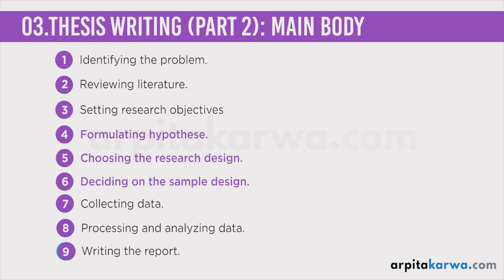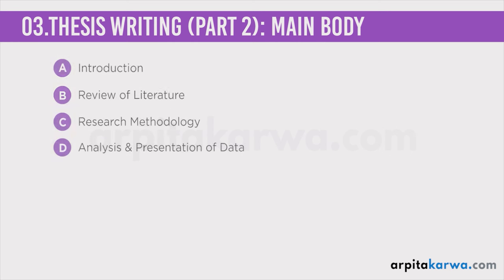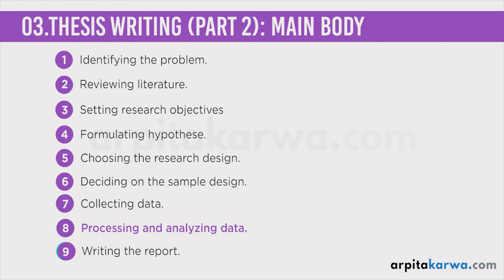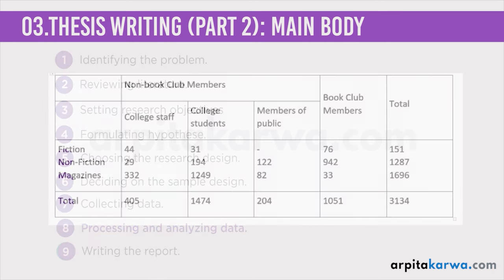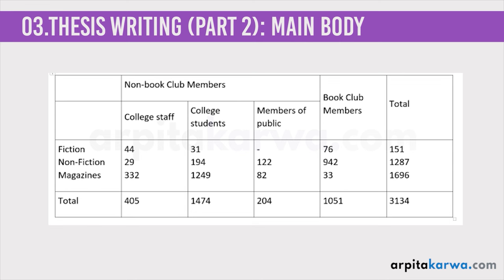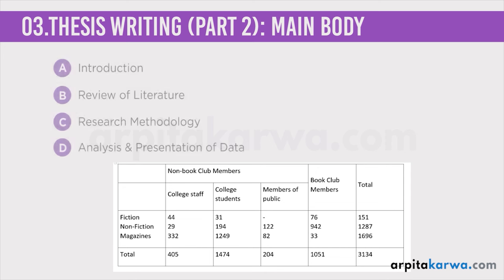The fourth chapter is analysis and presentation of data. After collecting data, the next step is to analyze and present it in a graphical format. In the thesis, this chapter presents the results accompanied by tables and graphs. Observations and interpretations must be clearly stated so the reader clearly understands what result was drawn from the experiment.